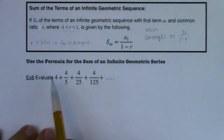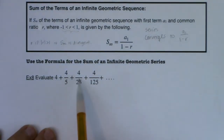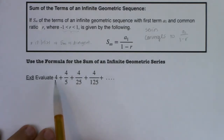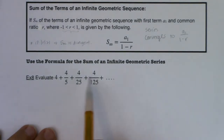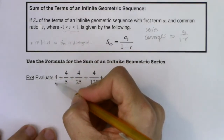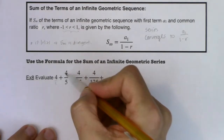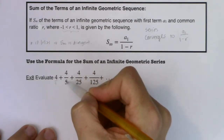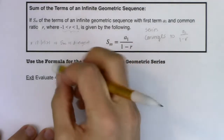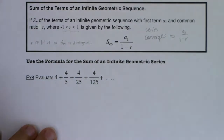So let's evaluate this series. We have 4 plus 4/5 plus 4/25 plus 4/125. It says it right here that it's an infinite geometric series. Even though 4 isn't a fraction, this is 4 over 1, and to go from each term to the next, I divide by 5. So the common ratio is 1/5.